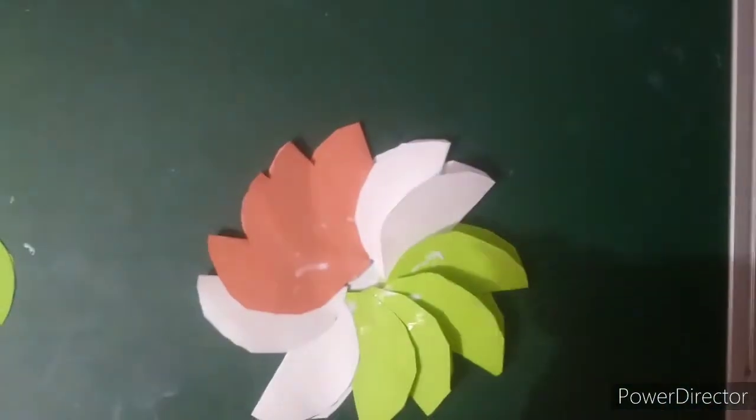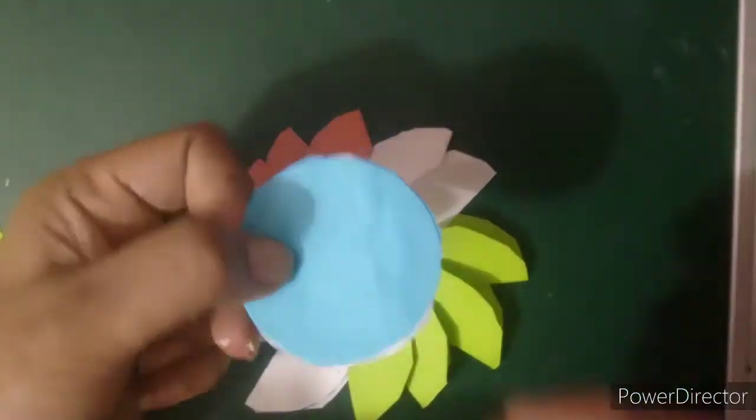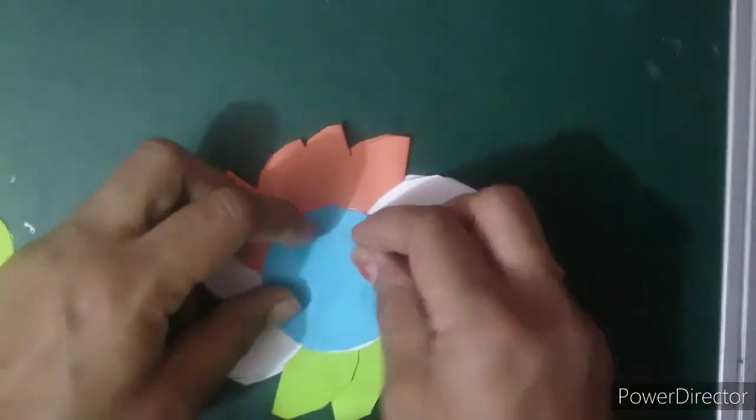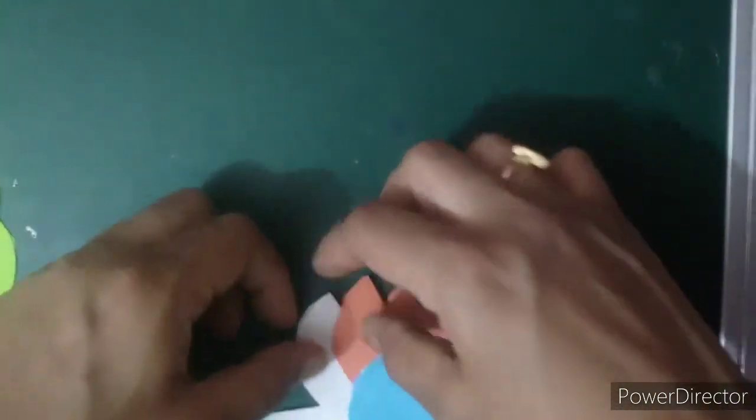Now what I will do, I will take second blue part, blue circle, and I will put it here like this. So main badge is done.